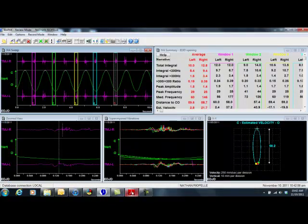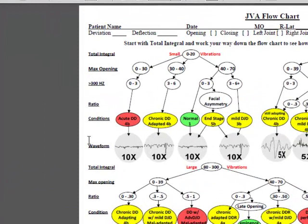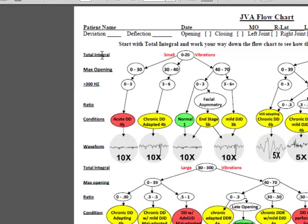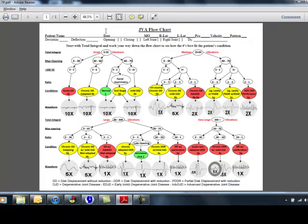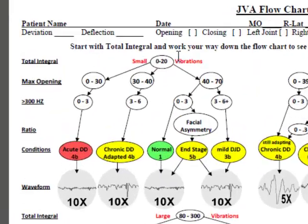Looking at the JVA flowchart, we are going to read it from top to bottom. We will look first at our total integral number. In this case, in my right joint it is 12.8, so that would put me between 0 and 20.